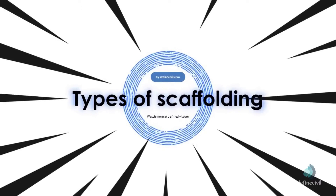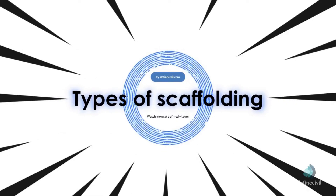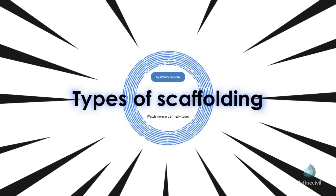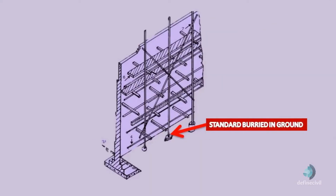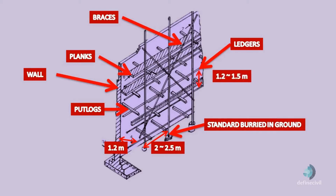Now let's move on to the main topic of today's video: types of scaffolding. Number 1 is single scaffolding, or bricklayer scaffolding. It is the oldest type and is still very popular. The components include standards, putlogs, and ledges. It is generally used for brick masonry. The scaffold runs parallel to the wall at a distance of about 1.2 meters. Distance between the standards is about 2 to 2.5 meters, and ledges connect the standards at vertical intervals of 1.2 to 1.5 meters. Putlogs are taken out from holes left in the wall to one end of the ledges.